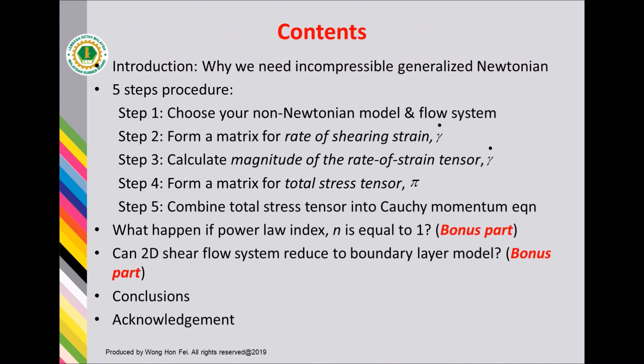This is my contents. Firstly, I will present the introduction on why we need to use the incompressible Generalized Newtonian model. Secondly, a five-step procedure consisting of: step one, choose your non-Newtonian model and flow system; step two, form a matrix for rate of strain tensor gamma-dot; step three, calculate the magnitude of the rate of strain tensor; step four, form a matrix for total stress tensor pi; and step five, combine the total stress tensor into the Cauchy momentum equations.